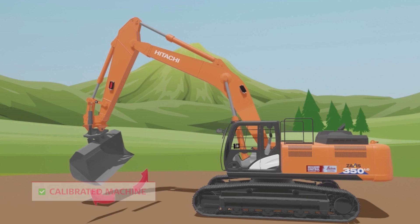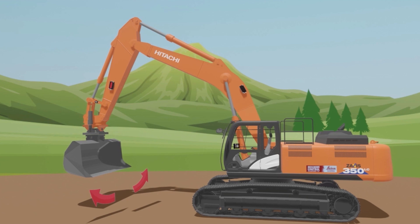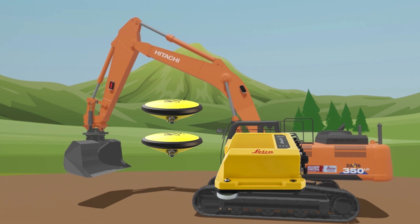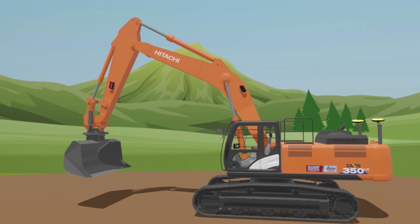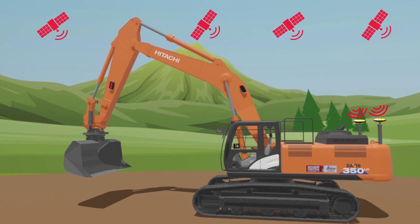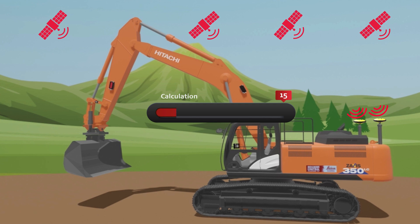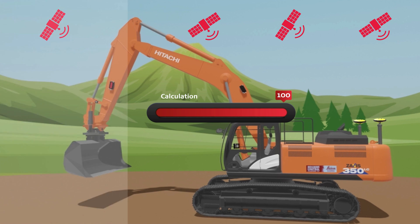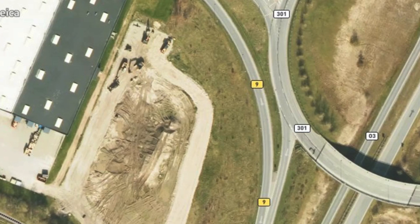So how do we get a centimeter accurate position of the machine? The 3D machine control system uses a GNSS receiver. While this GNSS receiver uses multiple satellite signals and powerful measurement engines to calculate the position, it is still not accurate enough for construction work.